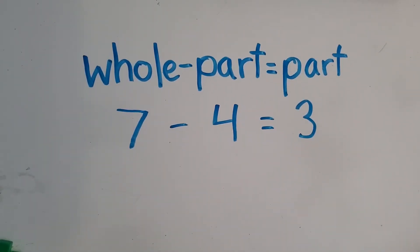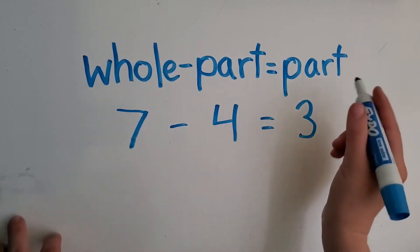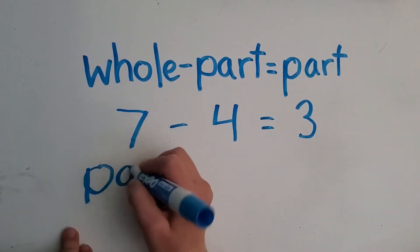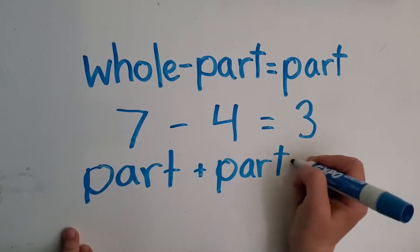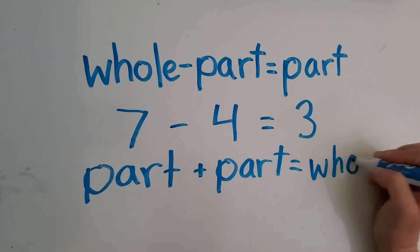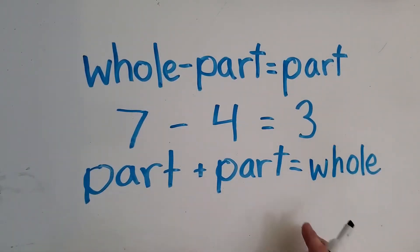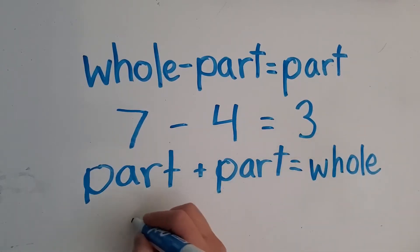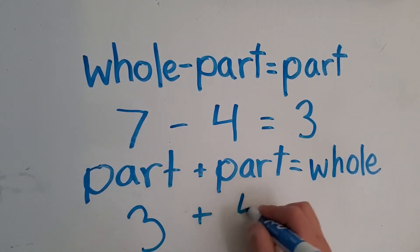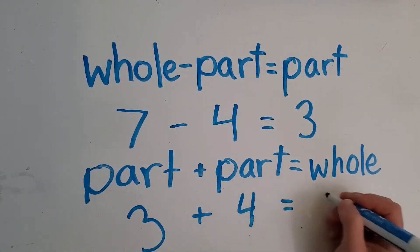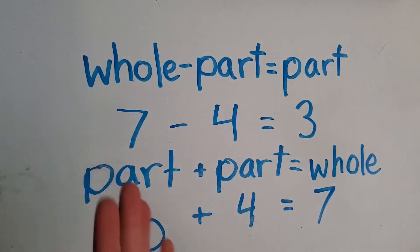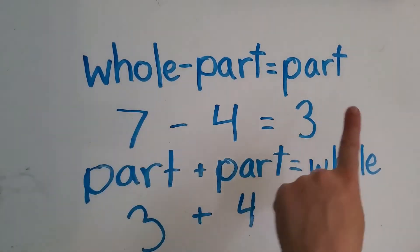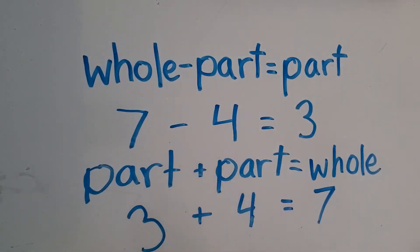With addition, it's the opposite, right? With addition, we actually start with a part, then we add the other part, and then we figure out how many there are in all and we get the whole. So with addition, we would start with the parts: three, which is a part, plus four, another part. And that will equal or give us how many there are in all — the whole — which is seven.